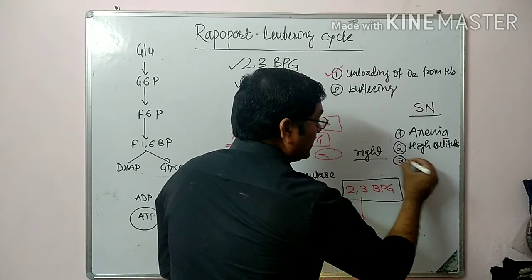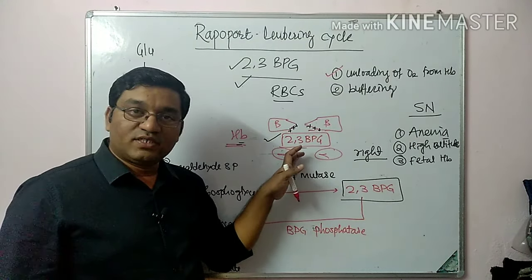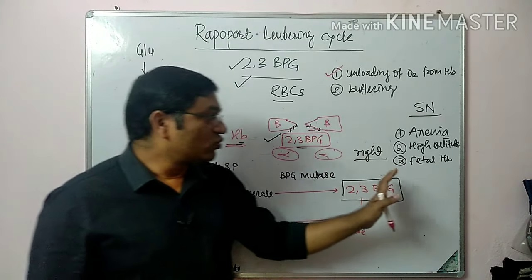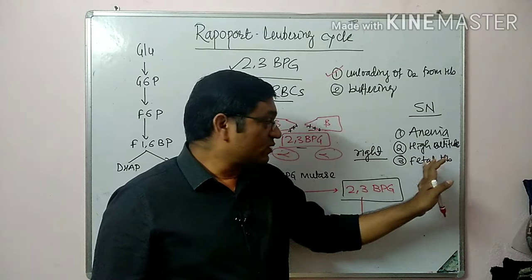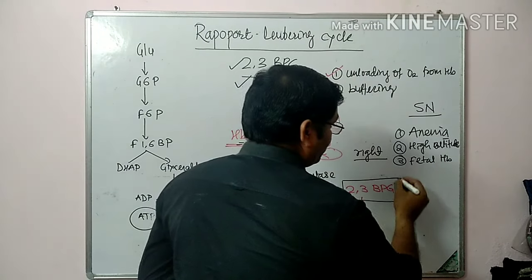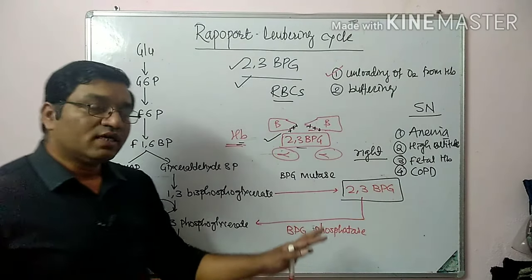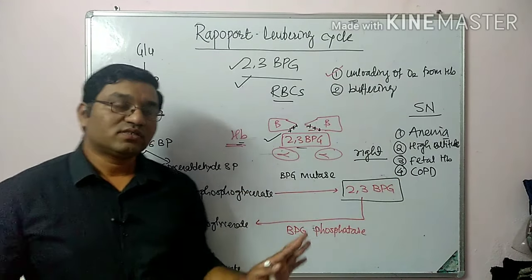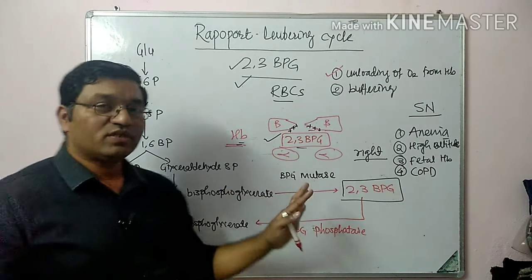Third, 2,3-BPG is important in fetal hemoglobin. Fetal hemoglobin has very less affinity for 2,3-BPG compared to adult hemoglobin, and it has more affinity towards oxygen. That's why there is placental transfer of O2 from the placenta to the fetus via fetal hemoglobin, as it has less affinity towards 2,3-BPG. Fourth, it is important in COPD — chronic obstructive pulmonary diseases — where there is less supply of O2 to the tissue, and hence a compensatory increase in 2,3-BPG levels occurs.